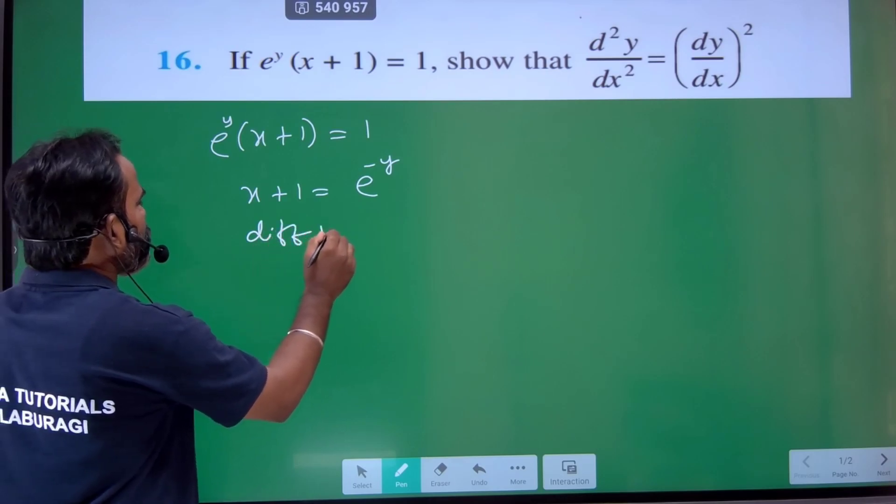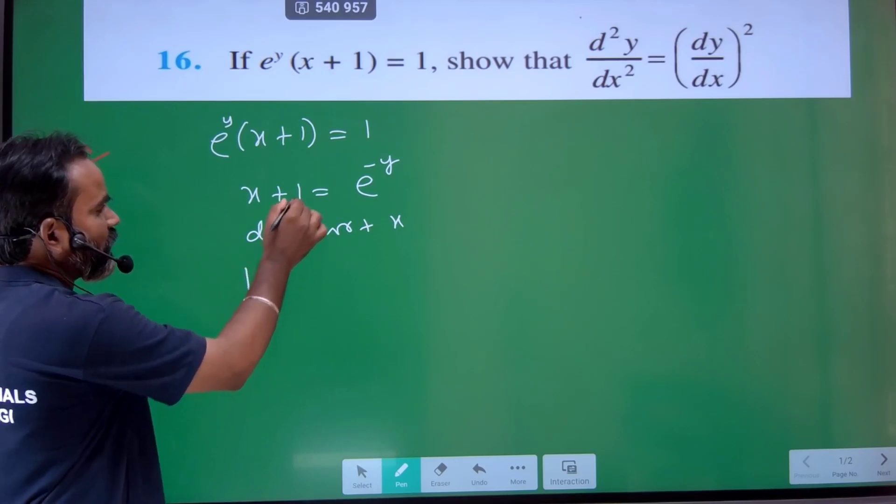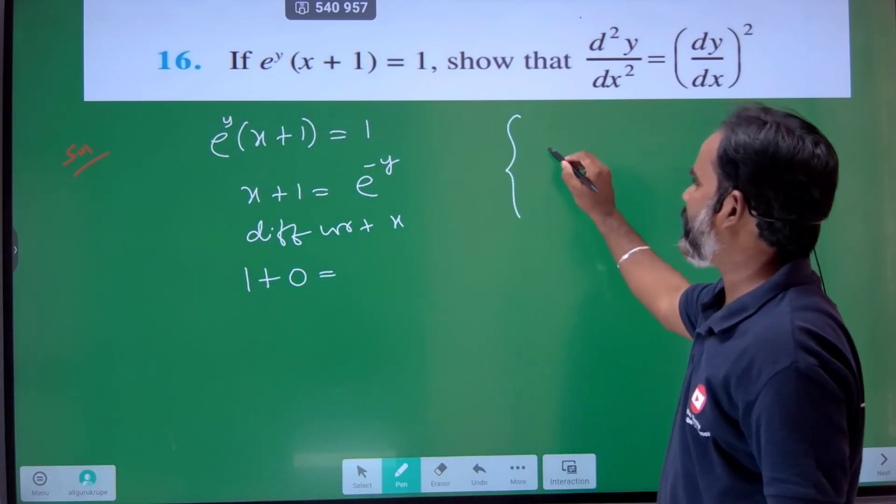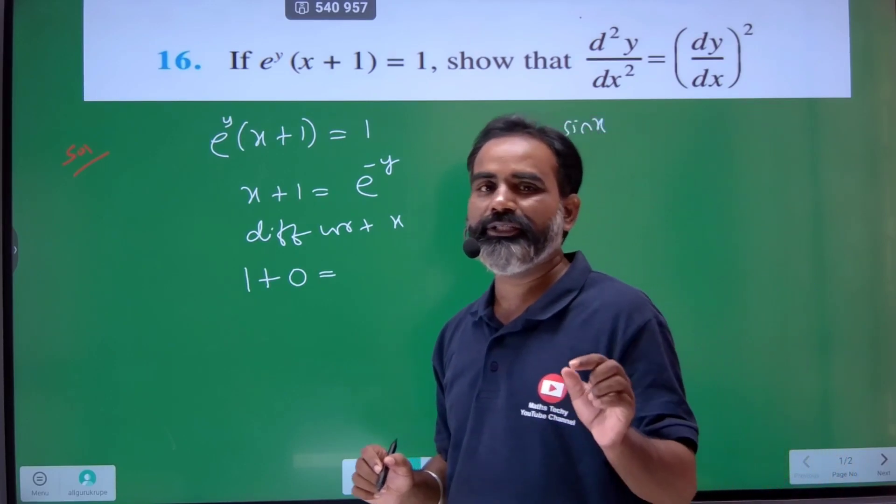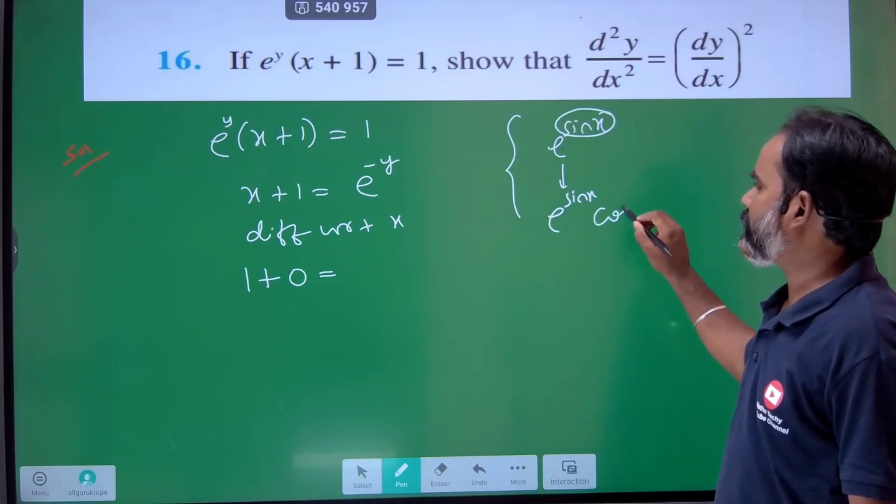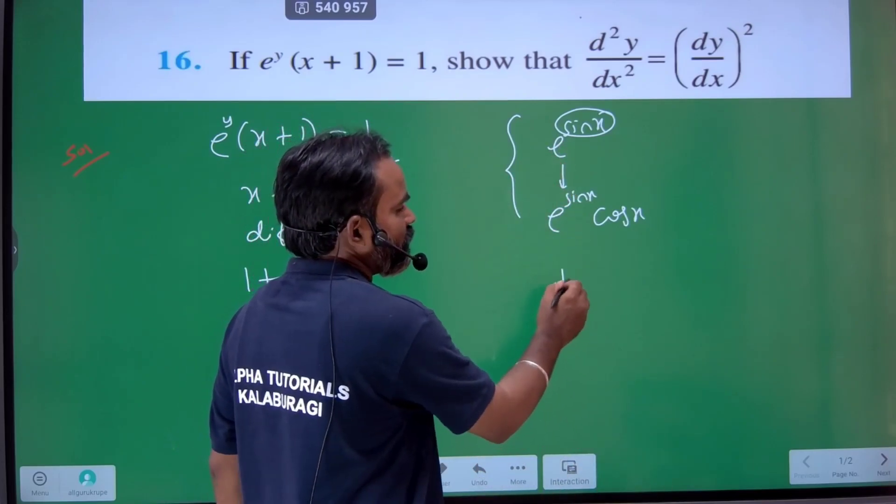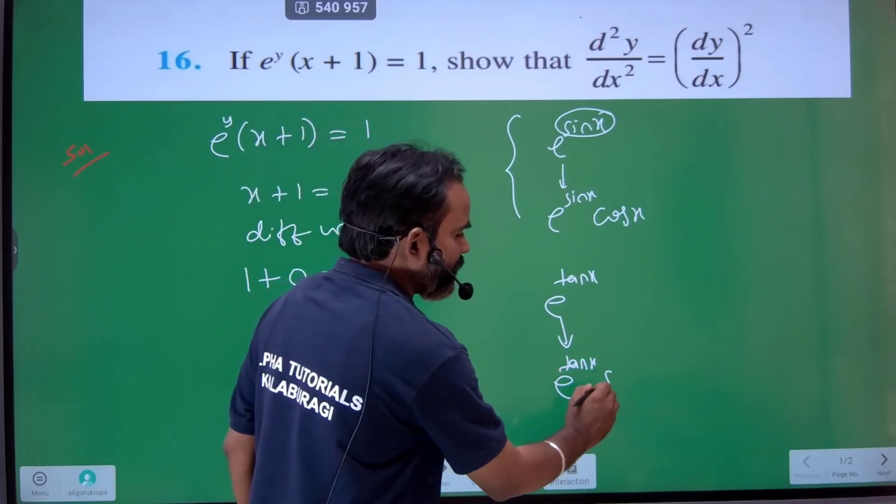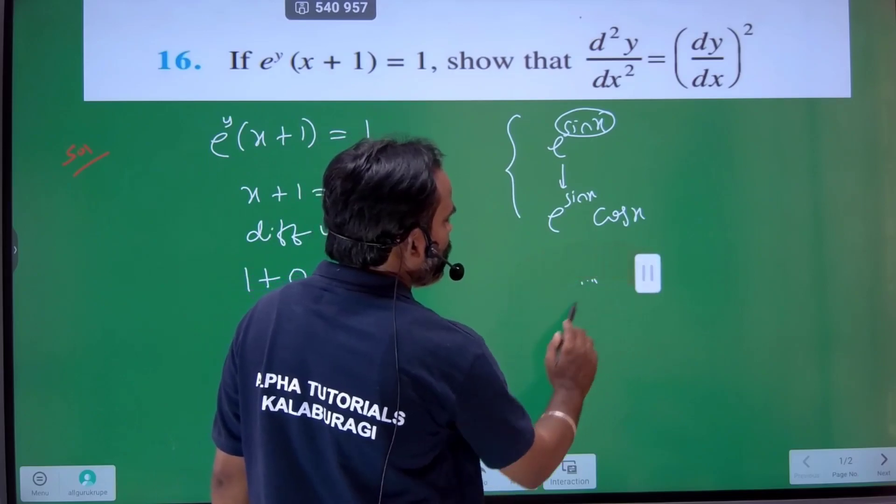Differentiate this with respect to x. Differentiation of x is 1, and the constant term will be 0. For e to the power of minus y, the differentiation follows the chain rule. For example, e to the power of sin x differentiates to e to the power of sin x times the derivative of sin x. This is a five marks problem.